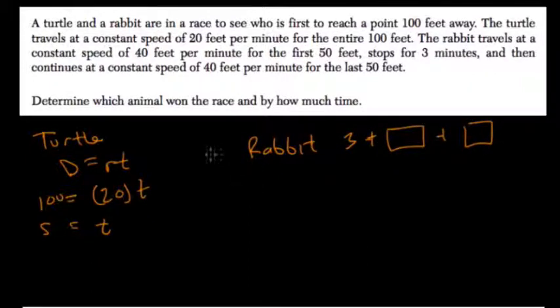So the rabbit first travels at 40 feet per minute for the first 50 feet. So 40 times T equals 50. 50 divided by 40 is 5 divided by 4, which is 1 and 1 fourth, right? Or 1.25 minutes.